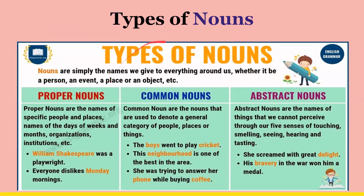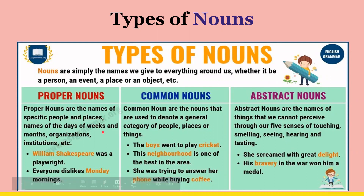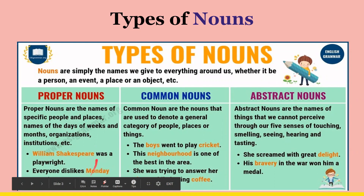Now there are three different types of nouns that you should know about. First we have proper nouns. Proper nouns are the names of specific people and places, names of the days of the week, and months, organizations, and a ton of other things. So like William Shakespeare — we have William and Shakespeare because it's a first and last name, so they're capitalized. And everyone dislikes Monday mornings — Monday would be capitalized because it is a day of the week.